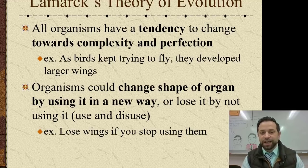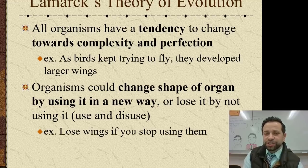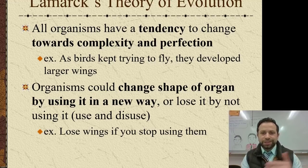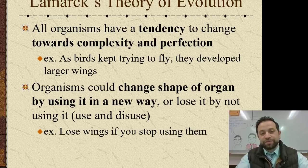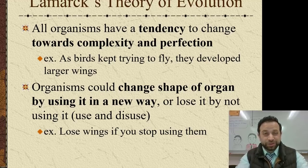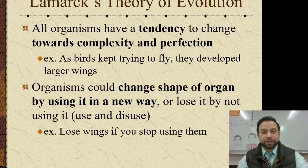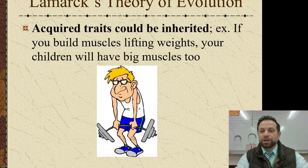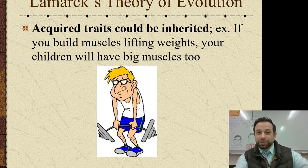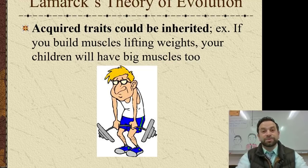For example, he said as birds keep trying to fly, they develop larger wings as they develop their flight skills. Organisms could actually change the shape of an organ by using it in a new way, or they could lose the use of that organ by not using it anymore — what we call use and disuse. Going back to the bird example, Lamarck would say that if birds stopped using their wings, they would eventually lose those wings.